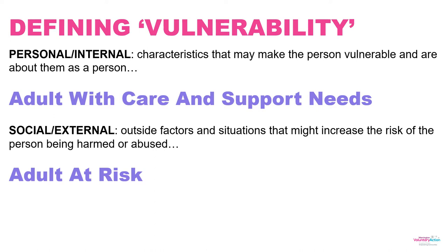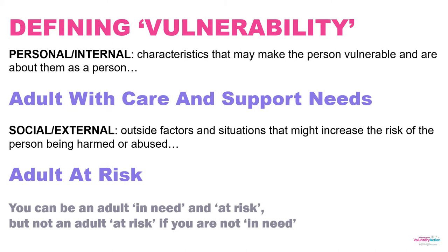These are two independent situations. You can absolutely have care and support needs, and you can also be at risk. However, you can't be considered someone who will be safeguarded unless you are both. You can have care and support needs and be completely fine; you can be at risk and be resilient and strong enough to manage that. However, the situation around safeguarding means you have care and support needs and you are at risk — and that means you are at a higher likelihood of being harmed.